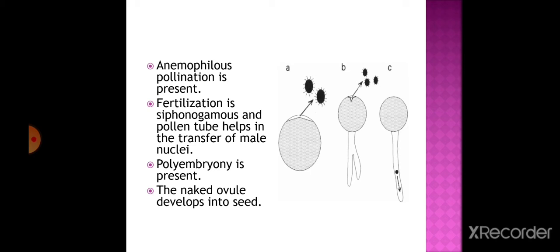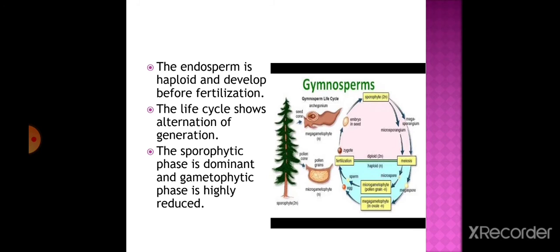Polyembryony is present - the presence of many embryos. The naked ovule develops into a seed. The endosperm is haploid, with a single set of chromosomes, and develops before fertilization. The life cycle shows alternation of generation: the sporophytic phase is dominant and the gametophytic phase is highly reduced.